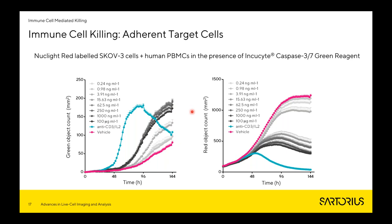We can also look at the red object count. By having that red transduced nuclear marker, we can use that as a measure of viability — if the cell starts to die, it will cease to produce that protein. Here we see the vehicle control showing proliferation of the SCOV3s, and then with increasing Herceptin concentration, we see decreasing viability of those tumor cells. The nice thing about running this assay in an imaging manner is that we continuously image those cells without performing any further manipulations — no enzymatic treatment or flow cytometry downstream analysis required.